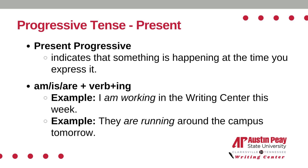The present progressive tense indicates that something is happening at the time you express it. It creates the sense that the action is occurring right now, is ongoing, or is habitual. It can be created by writing the words am, is, or are, plus the verb, plus the suffix -ing. For example: I am working in the writing center this week, or they are running around the campus tomorrow.